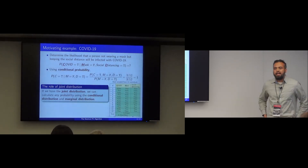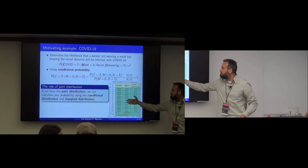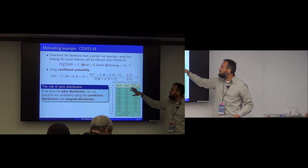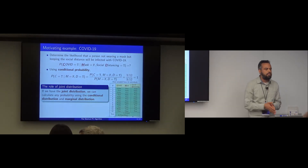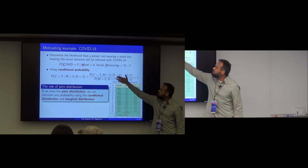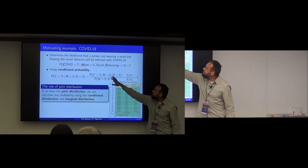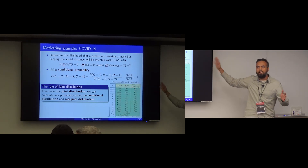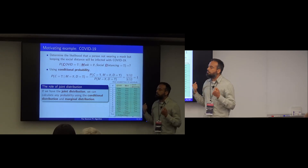We want to answer this probabilistic query with data. Imagine you've collected 12 samples — 12 individuals — and asked each one: did you have COVID, did you wear a mask, did you keep social distancing, yes or no? Then by definition we use conditional probability and simply count: how many cases have (true, false, true), how many have (false, true), and so on, and we get the final answer.